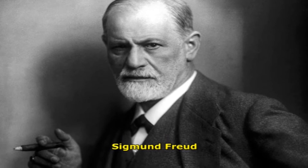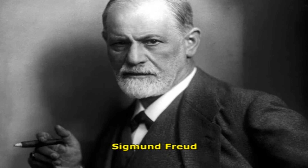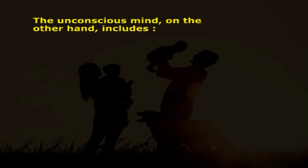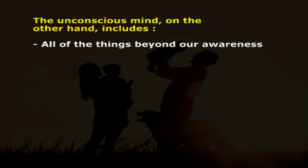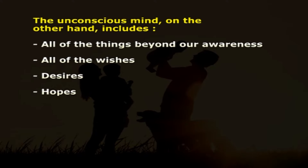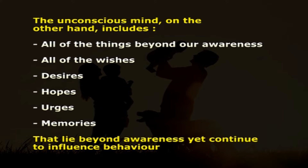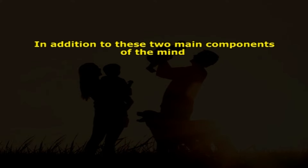The conscious mind includes all the things that we are aware of. The unconscious mind, on the other hand, includes all of the things beyond our awareness — all of the wishes, desires, hopes, urges, and memories that lie beyond awareness yet continue to influence behavior.